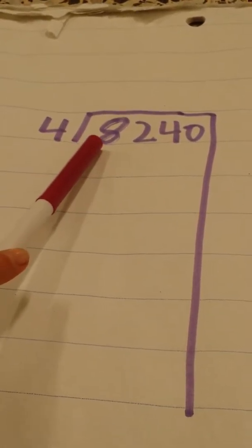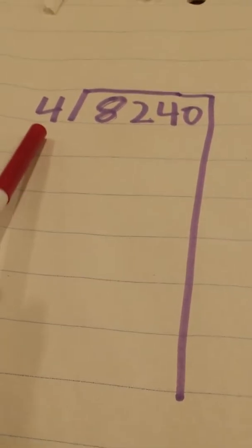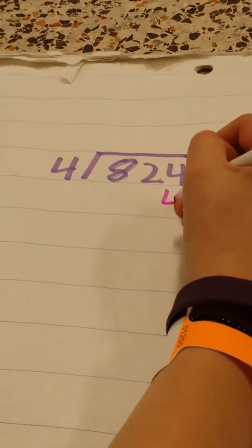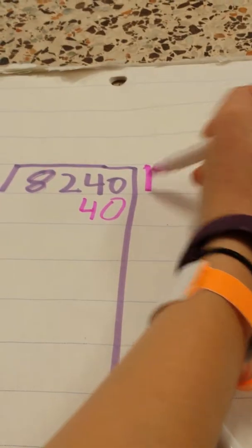So the question is 8,240 divided by 4. And the second step is we are going to find something to multiply 4 by to get us to lower this number here. And the first thing we're going to use is 10. So 4 multiplied by 10 gets us 40. So we're going to write 40 under here, and whatever you're multiplying by, you have to put it over at the side.